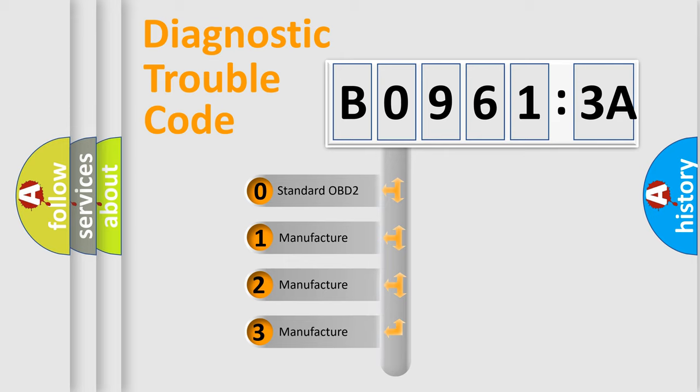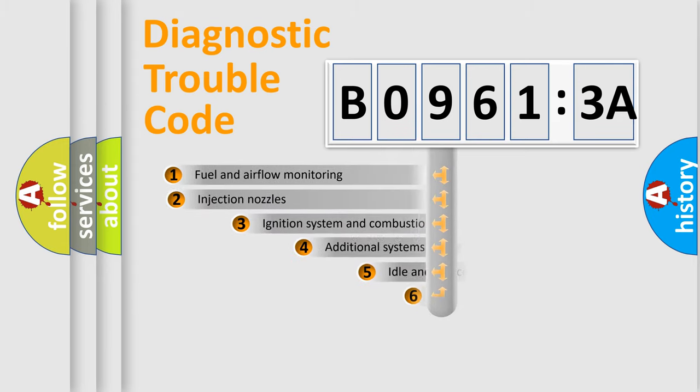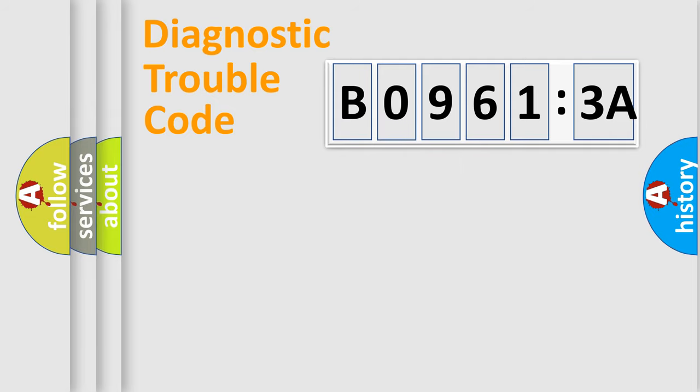If the second character is expressed as zero, it is a standardized error. In the case of numbers 1, 2, or 3, it is a manufacturer-specific expression of the car-specific error. The third character specifies a subset of errors. The distribution shown is valid only for the standardized DTC code. Only the last two characters define the specific fault of the group.